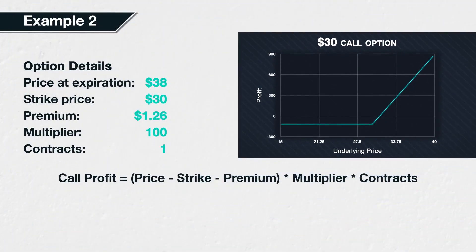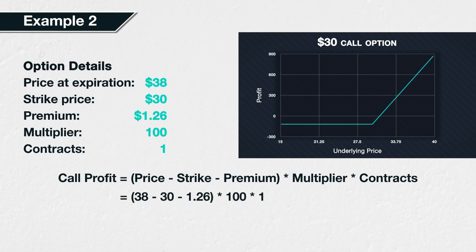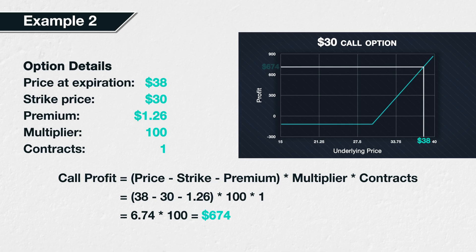Example 2. This time we've purchased the $30 SLV call option for $1.26, and let's assume that the price of SLV at expiration is $38. This means we have a price at expiration of $38, a strike price of $30, a premium paid of $1.26, a contract multiplier of 100, and a number of contracts of 1. Substituting all these values into the formula, we get (38 − 30 − 1.26) × 100 × 1, which gives us 6.74 × 100, which equals $674. So that's $6.74 per share multiplied by 100 shares — this long call option position has therefore made a profit of $674.